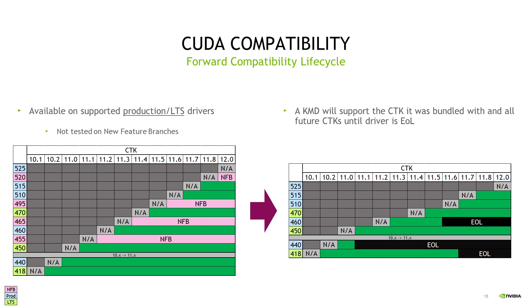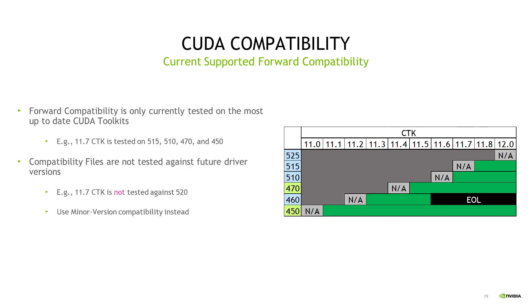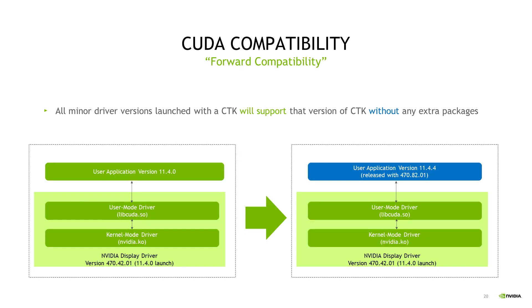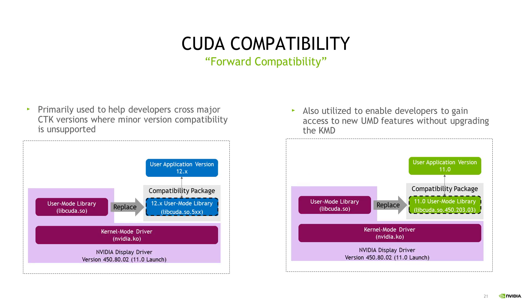Looking at the life cycle of forward compatibility packages: this feature is only available on production and LTS drivers, not new feature branches. Compatibility packages are only provided for a given KMD for the life cycle of that driver. Forward compatibility packages are not required for older CTKs calling into newer drivers — that's covered by backwards compatibility for binaries or minor version compatibility for source code. With LTS drivers, you may download a new CTK that comes with a newer driver set and not need any special packages. The forward compatibility packages are really meant for different major versions of the CTK.